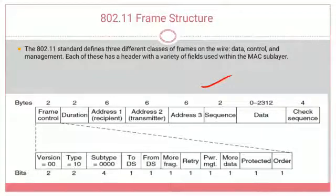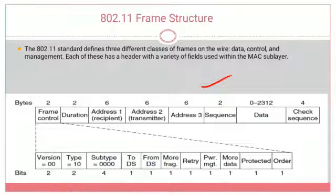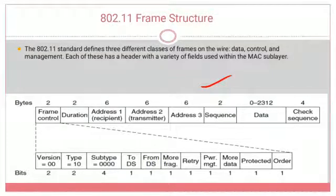The frame structure has different fields: frame control, duration, address 1, address 2, address 3, sequence, data, and check sequence. Address 1 is for the recipient (destination address), address 2 is for the transmitter (sender's address). Each field is allocated a specified number of bytes. The frame control field consists of 2 bytes and is further divided into 11 different subfields.